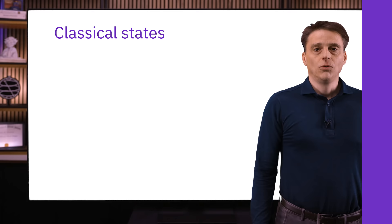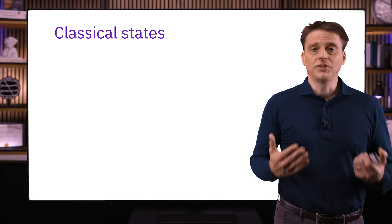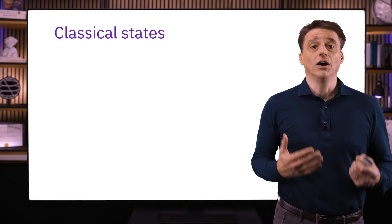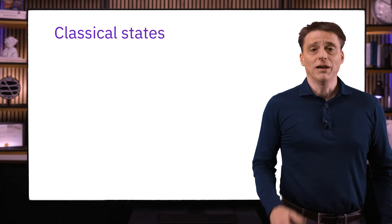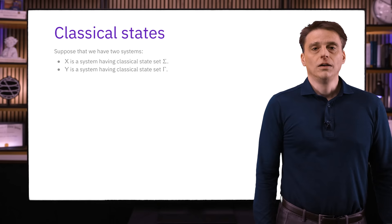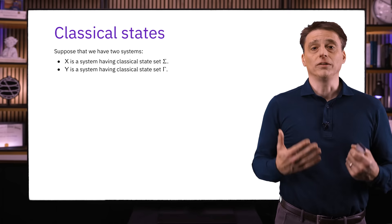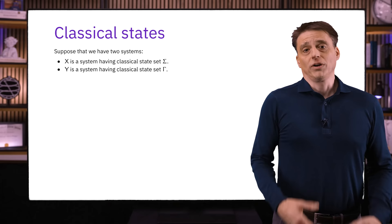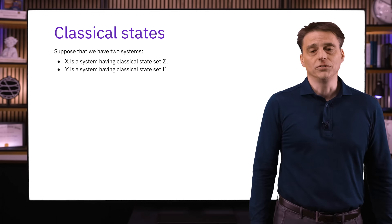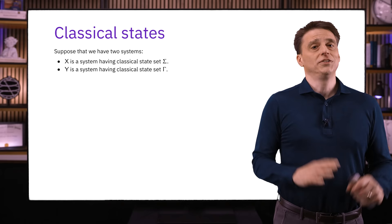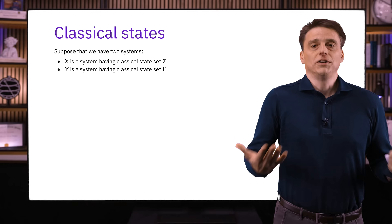We'll start by talking about classical states of multiple systems. Recall from the previous lesson that a classical state of a system is a configuration that can be recognized and described unambiguously without any uncertainty or error. In mathematical terms, when we refer to a classical state set, we just mean a finite and non-empty set. We'll begin our discussion of multiple systems by supposing we have just two systems, X and Y. X has a set of classical states called sigma, and Y has a set of classical states called gamma. By starting with two systems, we can focus on the fundamental ideas without getting bogged down in details.